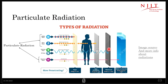Let's move to a different kind of radiation called particulate radiation. We all saw what electromagnetic radiation is — x-ray is a kind of electromagnetic radiation. Particulate radiation, on the other hand, is the radiation or the movement of particles.